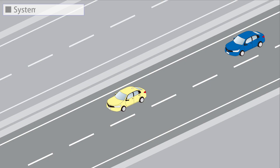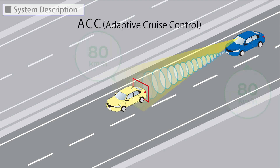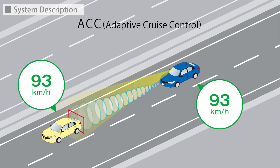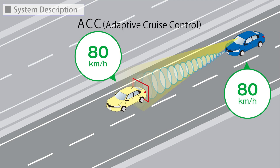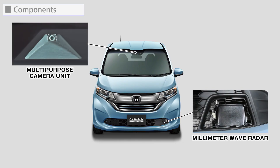ACC adaptive cruise control uses a camera and a millimeter wave radar to detect the vehicle in front and follow it while maintaining an appropriate distance. ACC automatically accelerates and decelerates according to the speed of the vehicle in front. The main system configuration consists of a camera and a millimeter wave radar.